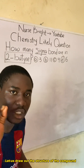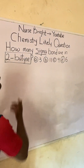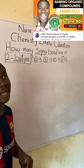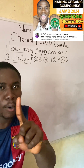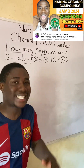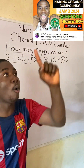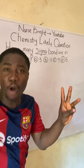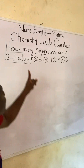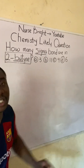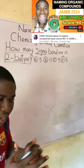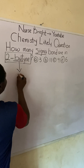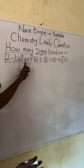In my other video lesson I explained that whenever an organic compound has one carbon, the prefix name should start with 'meth.' For one carbon it's 'meth,' for two carbons it's 'eth,' for three carbons it's 'prop,' and for four carbons it's 'but' — as you can see here. So this particular compound has four carbons because of the prefix 'bute.' Forget about the rest of the name for now; I'm going to come back to that.